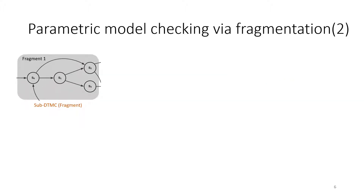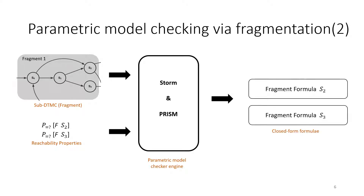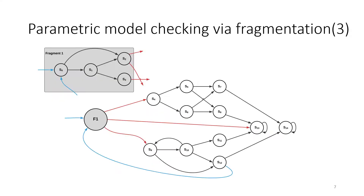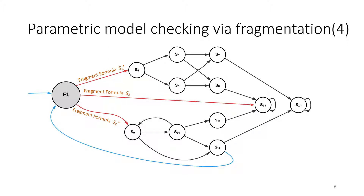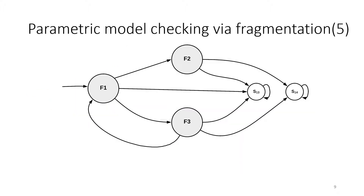Once we obtain a fragment, we pass it with associated properties to the existing PMC to obtain expressions. This fragment expression will be used to update the transition probabilities of the original model. In the original model, we replace the first fragment with a single state and update the outgoing transition probabilities using the fragment expressions obtained. We then find the rest of the fragments in the model until no more fragments are available — in this example, fragment 2 and 3. We replace each fragment with a single state and update the transition probabilities, and the original model becomes a model with much fewer states.